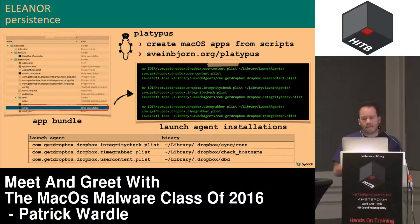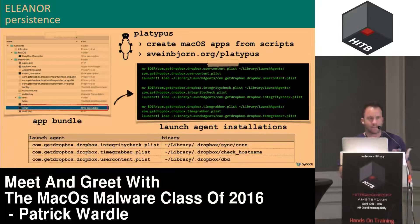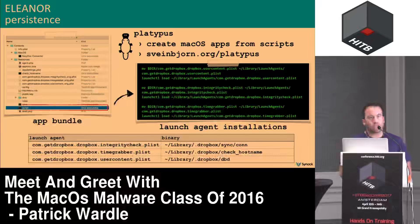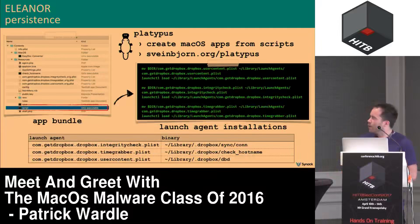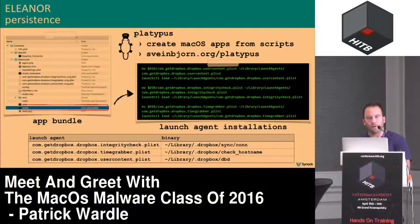It looks like the malware authors used a development tool called Platypus to create this Mac malware. Platypus isn't malicious — it just takes a script and converts it to a native Mac application. Platypus applications, when executed, run a bash script called 'script'. Since it's just a bash script, it's very easy to analyze — we don't have to decompile or disassemble it, we just open it in a text editor. When we do that, we can see it's persisting three different launch agents.